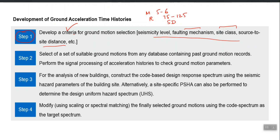If I have to select seven ground motions, I will start by selecting around 30, because some may have peculiar behavior and need to be dropped. A very commonly used database is the PEER Ground Motion Database — Pacific Earthquake Engineering Research. You can find their link, create a free account, enter selection criteria like magnitude range, source-to-site distance range, and site class, and it will return ground motion histories in text format which you can plot and modify further.